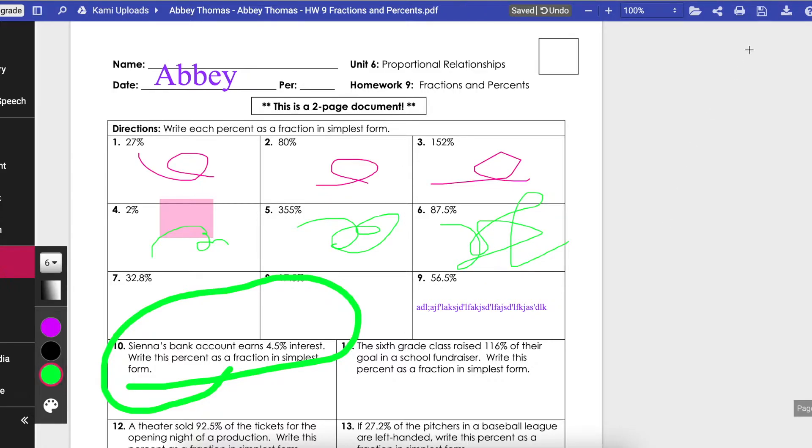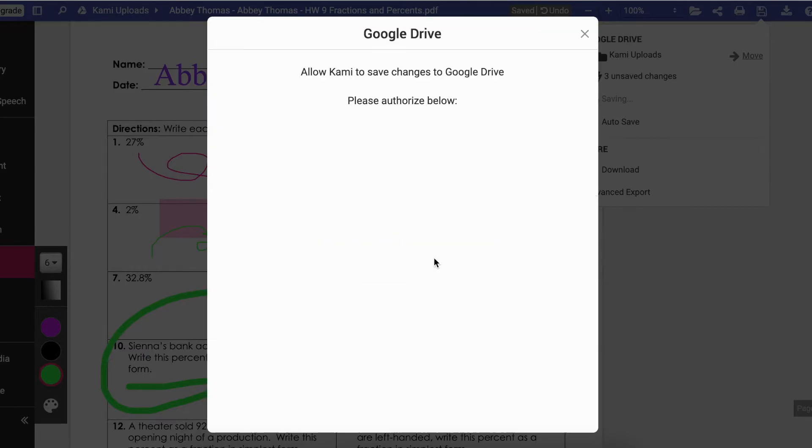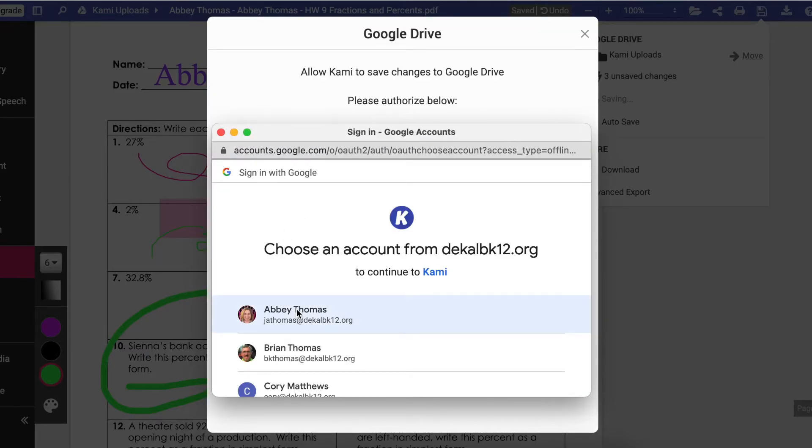After you've completed all the work you're going to click Save. It's up in the top corner and it looks like a floppy disk. Choose to save it to your Google Drive and it may ask you to authorize again.